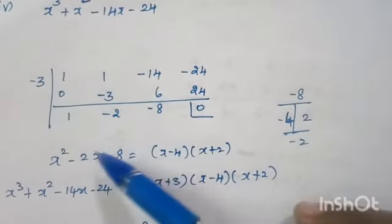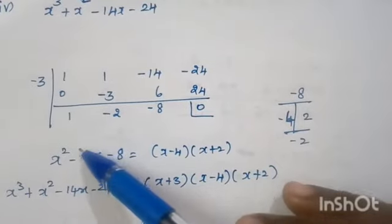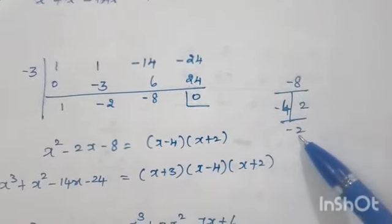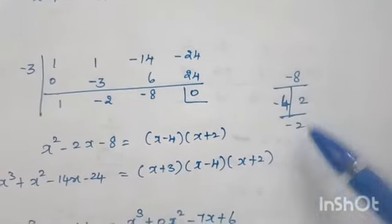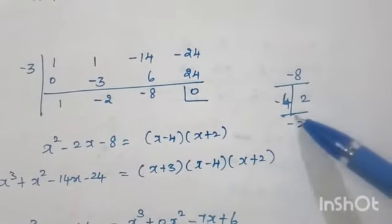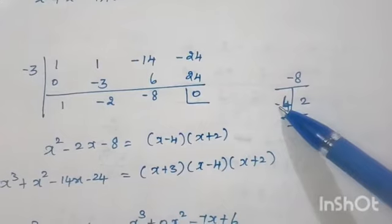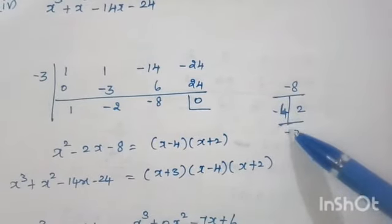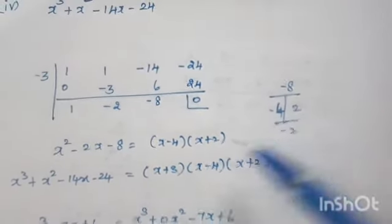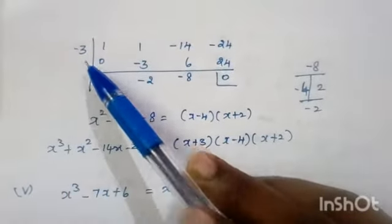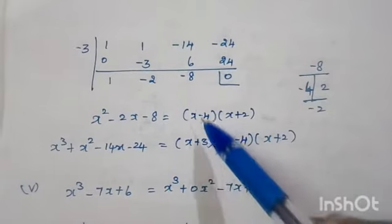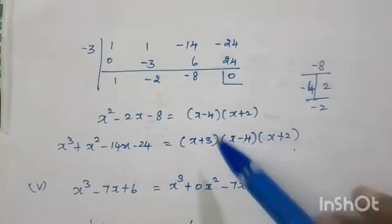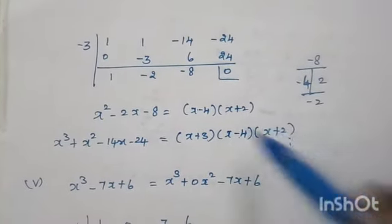To factor x² minus 2x minus 8: product value minus 8, sum value minus 2 — factors are minus 4 and plus 2, since the sum is negative give the minus sign to the greater number. So x² minus 2x minus 8 equals x minus 4 into x plus 2. Since we used number minus 3, the factor is x plus 3. Final three factors: x plus 3, x minus 4, and x plus 2 — these can be written in any order.